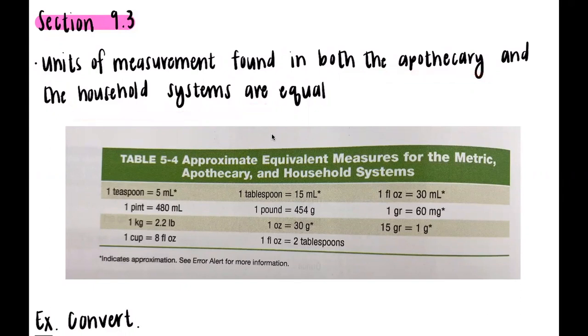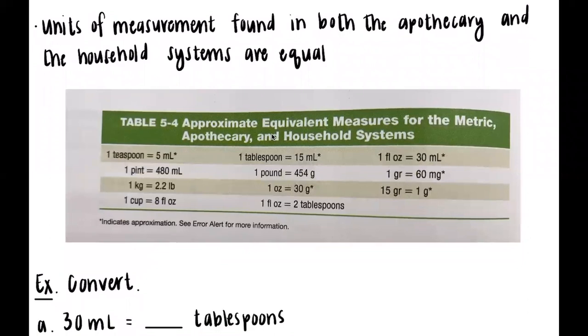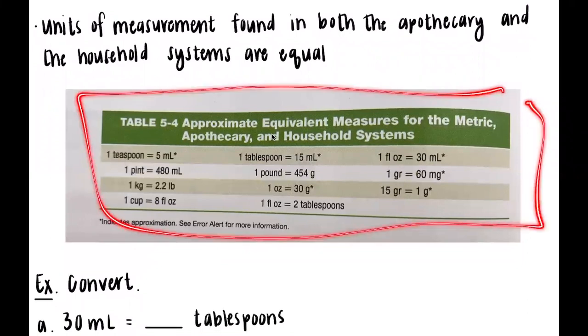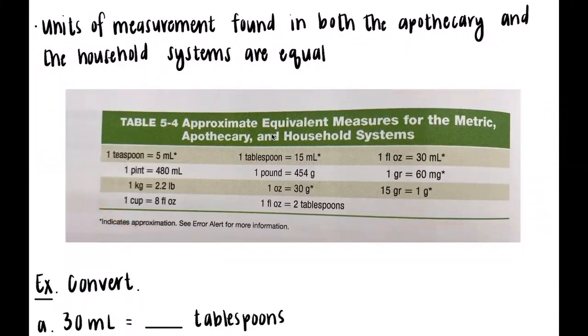Here's another table of the equivalent measurements for the metric, apothecary, and household systems. As I mentioned, if you're not going from metric to metric, I will give you the measurement. For example, notice one pint is equal to 480 milliliters. Milliliters fall under the metric system, but pint does not, so that's information I will give you. But if we were going kiloliter to milliliter, that's something you would have to know.